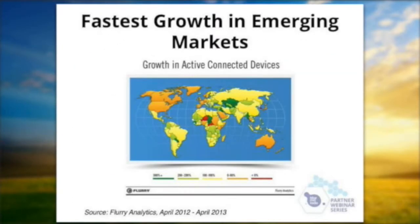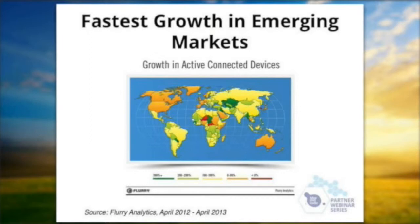As you can see here, this chart was produced by our friends at Flurry. The yellow areas are showing where the high growth areas are — these are areas growing at over 100% per year. Most of the high growth areas are in Asia, so Russia, China, India, as well as Latin America and parts of Africa. The developed markets — U.S., Western Europe — are growing at less than 100% per year as far as connected devices. So we really focus on the areas that are going to make you the most money in the coming years.